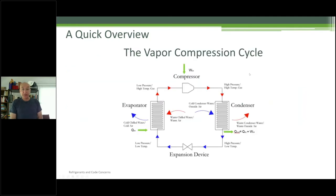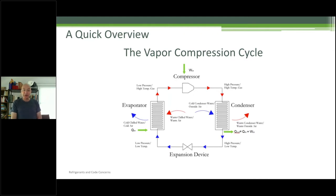The vapor compression cycle — I meet a lot of engineers who specify these systems but really don't understand how they work on a thermodynamic level. First, you compress gases. The compression cycle basically stays in gas until you condense it — that's why it's called a condenser. Then you have an expansion device at high pressure that evaporates into the evaporator, giving you cooling, just like any spray bottle. And then the cycle repeats.